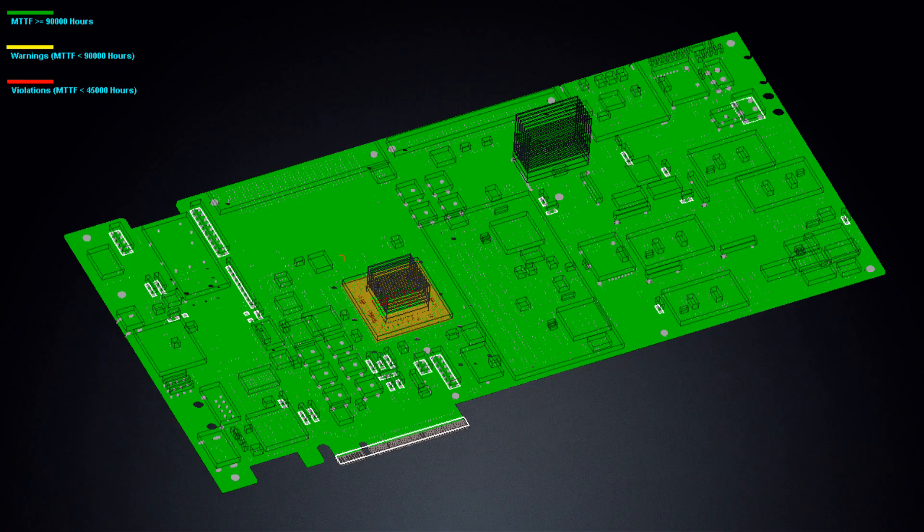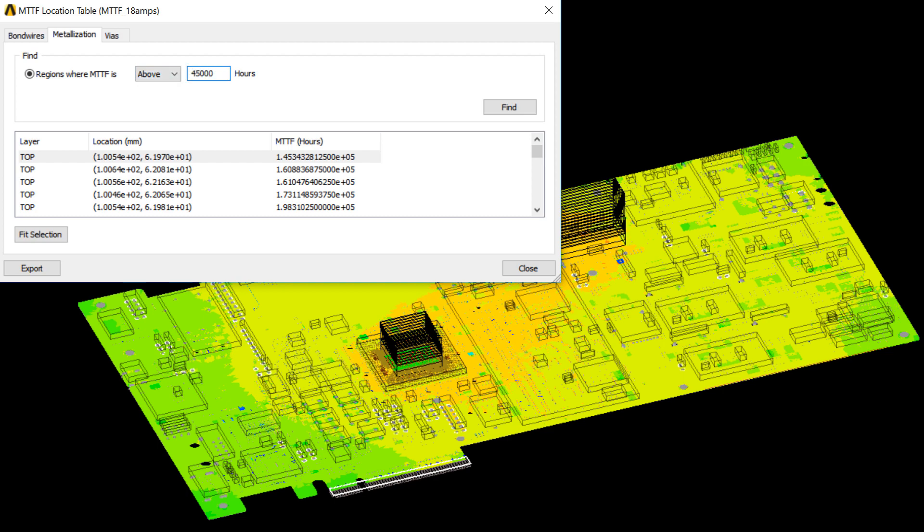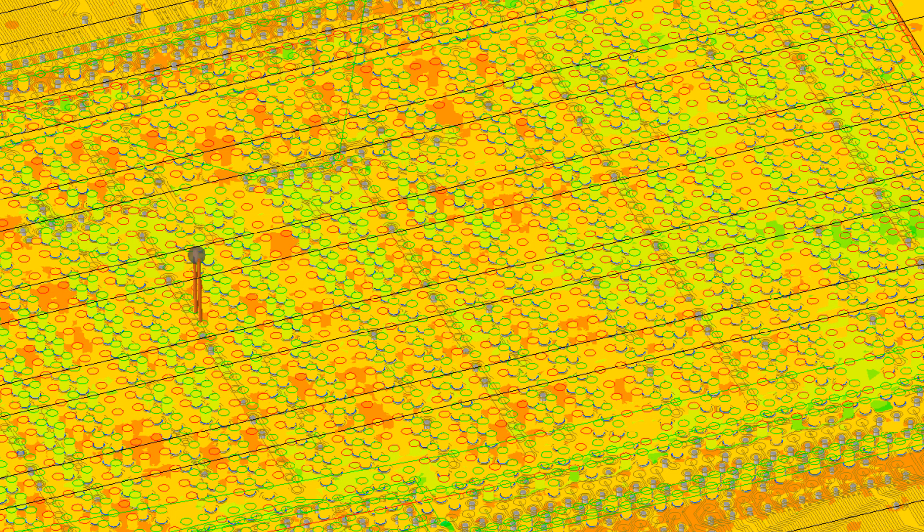In addition to the MTTF plots, SI-WAVE displays warnings and errors ranked by predicted mean failure time and severity. Navigate to the regions above or below a specified MTTF error threshold, or zoom in to the vias and bond wires to locate the affected component.